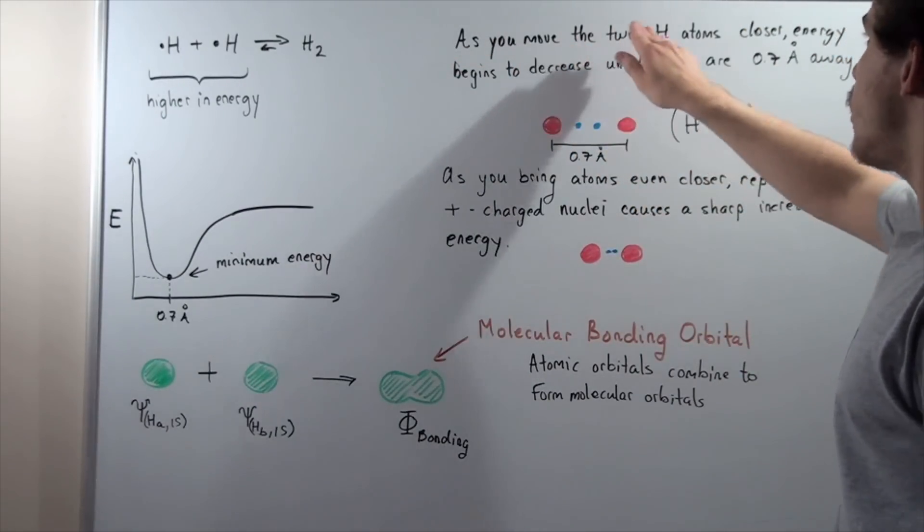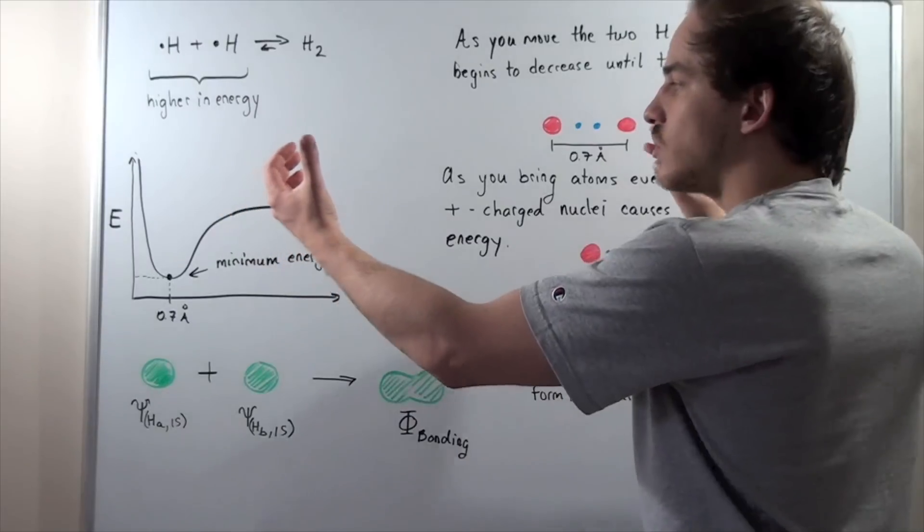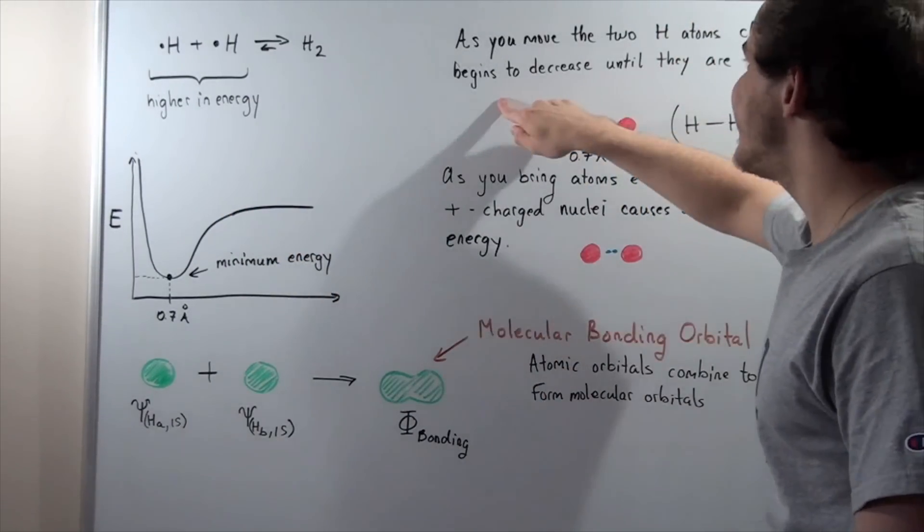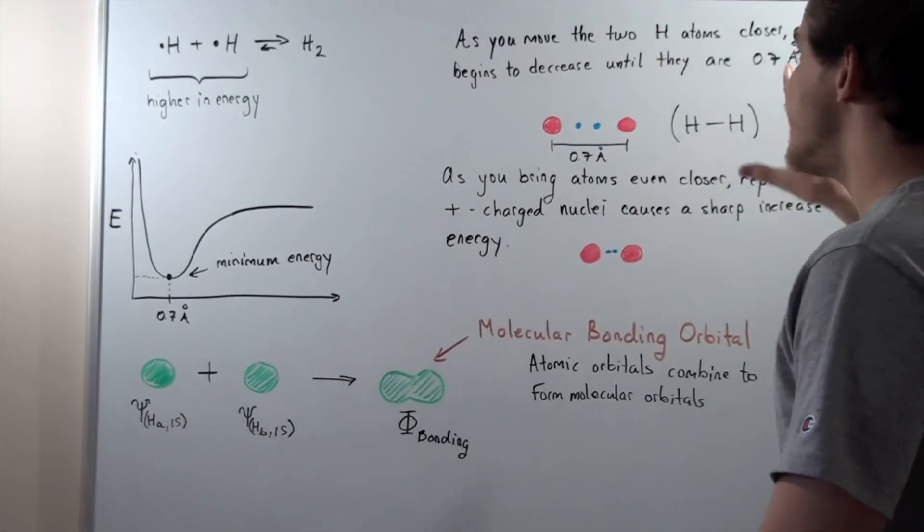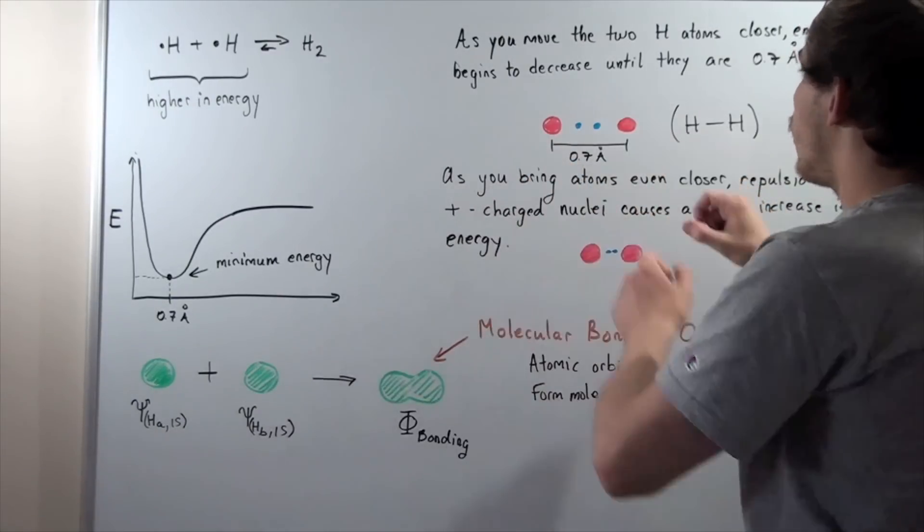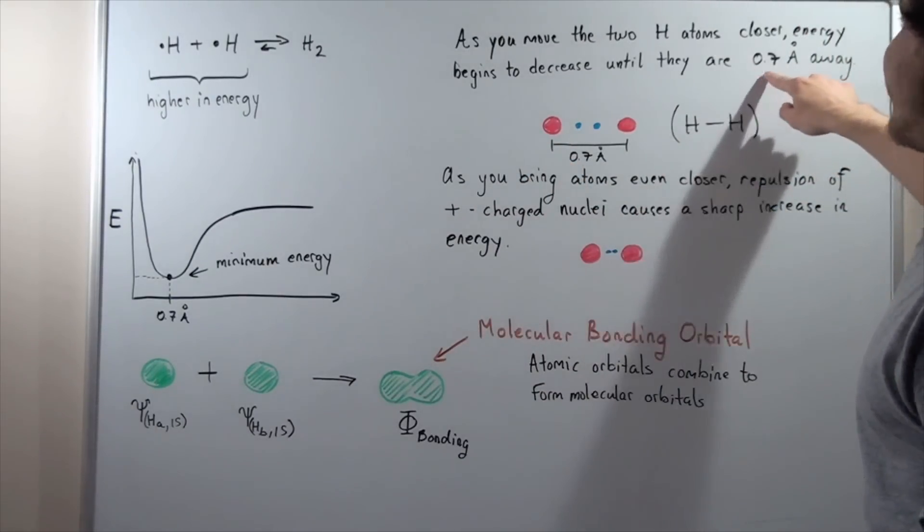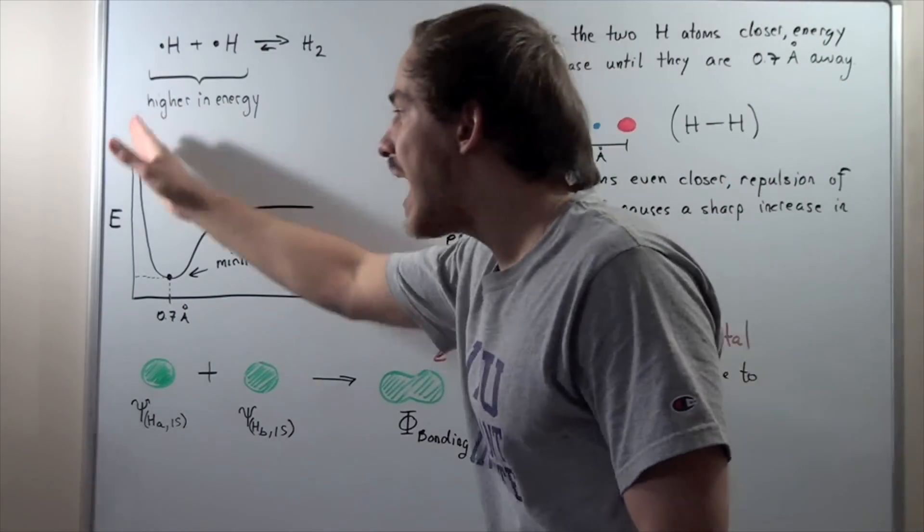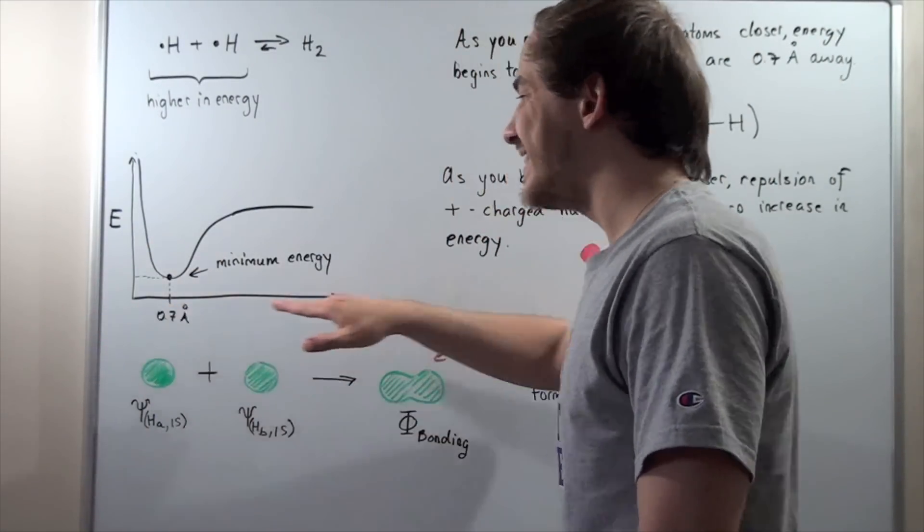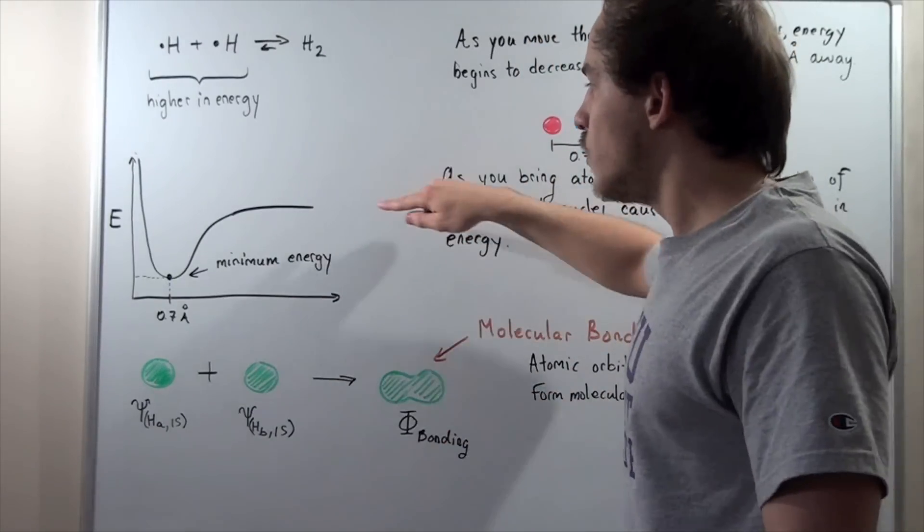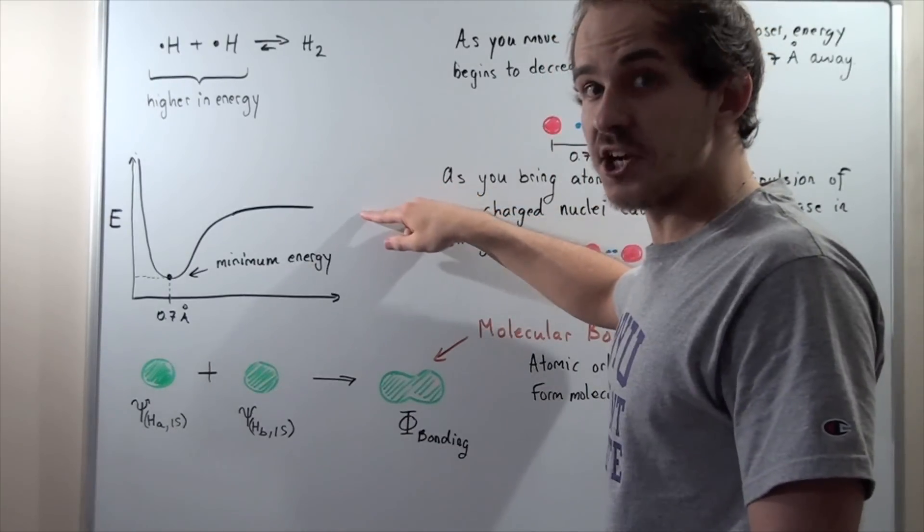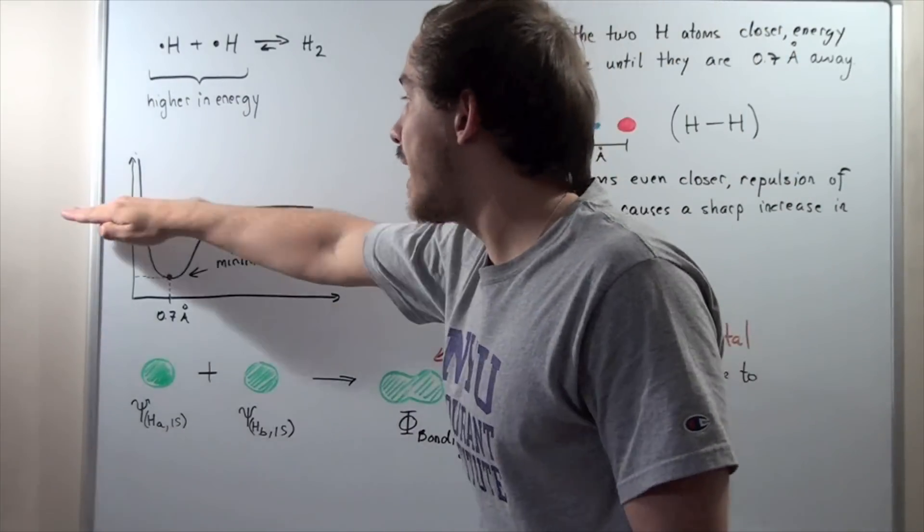As you move the two H atoms closer and closer from a far distance apart, energy begins to decrease until we reach this point, until we reach 0.7 angstroms away. If we graph energy versus our distance between them, we will see that at a distance far apart, we're going to have some energy.